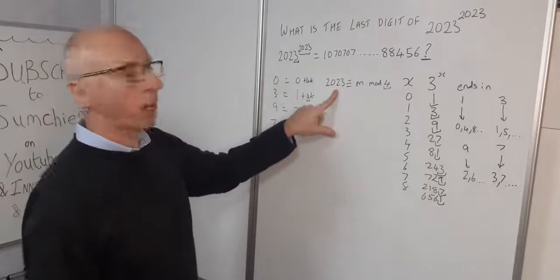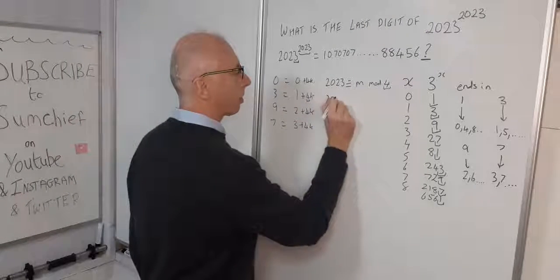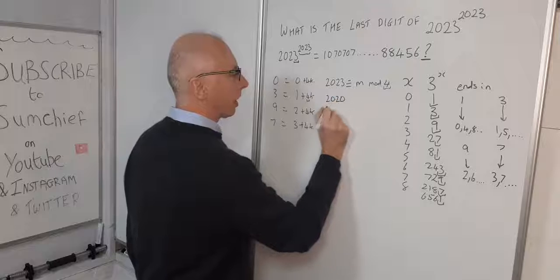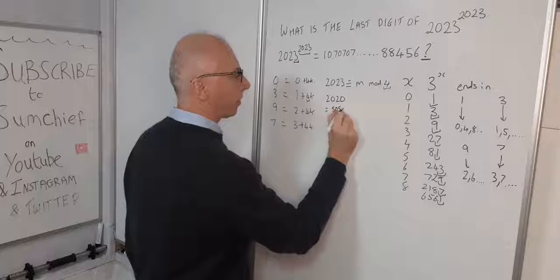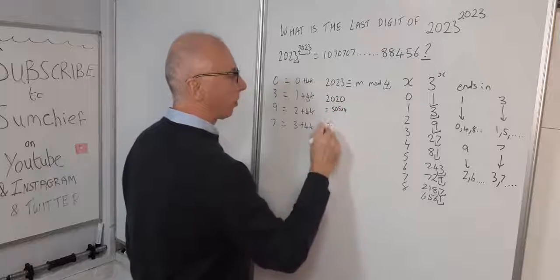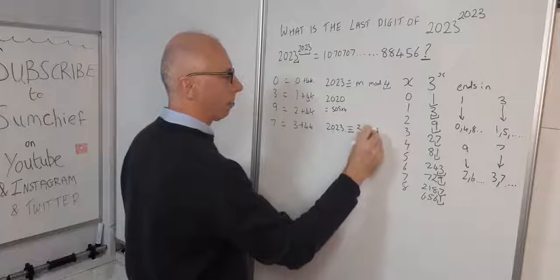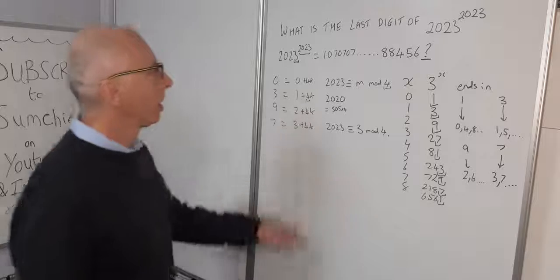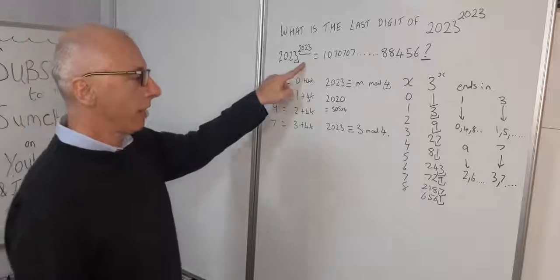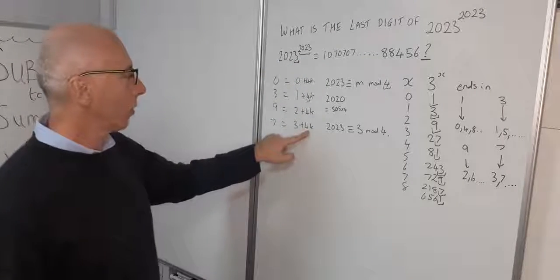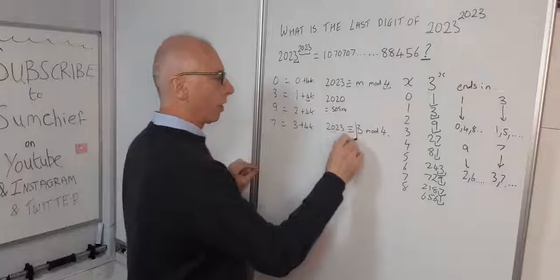We know m is 3. So 2023 equals 505 times 4 plus 3. Therefore, we can say that this is going to give us 3 + 4k, so we're looking at this one.